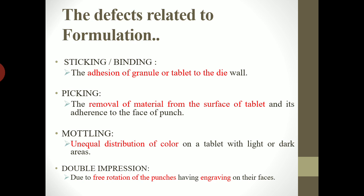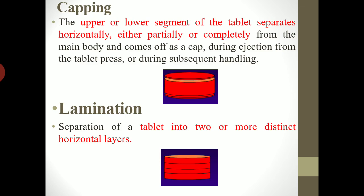Next is mottling — unequal distribution of color on the surface of the tablet, with light or dark areas on the surface. Next is double impression, which occurs due to free rotation of punches having engraving. If the punch has engraving, the letter will be embossed twice on the surface of the tablet, and that is called double impression.